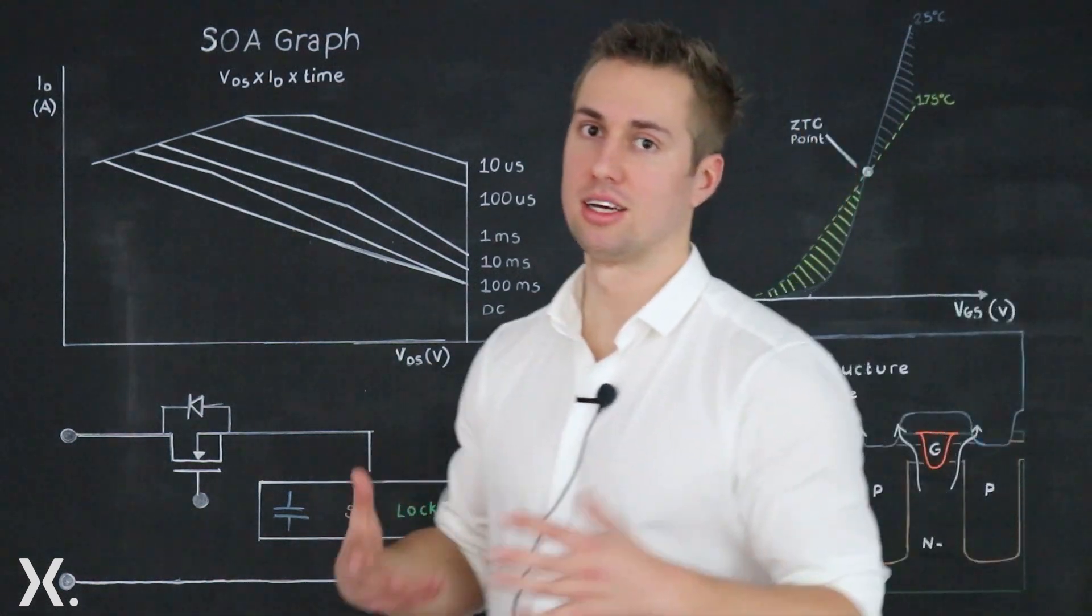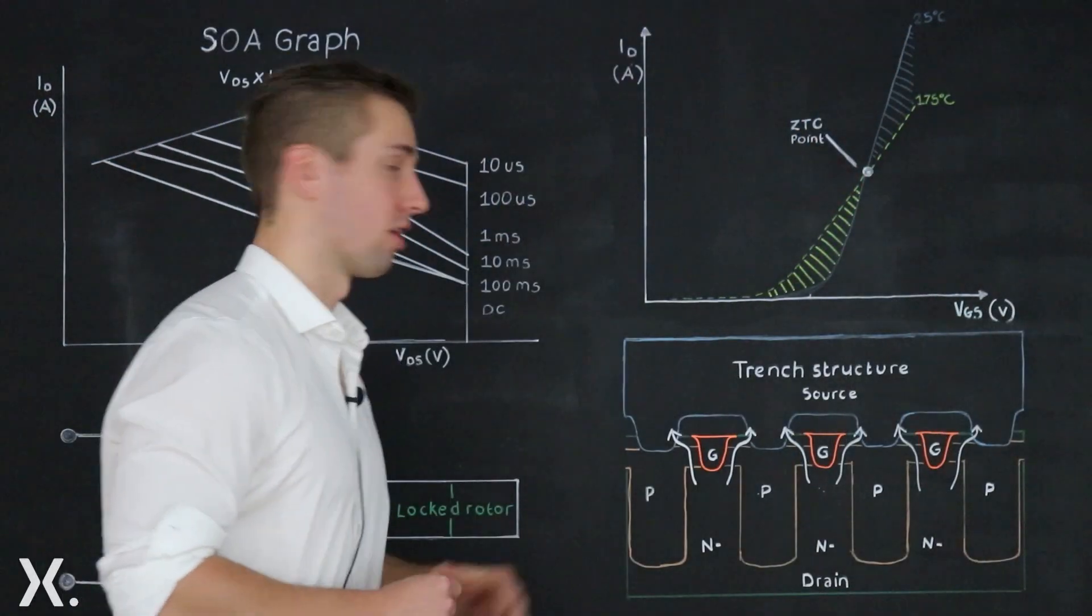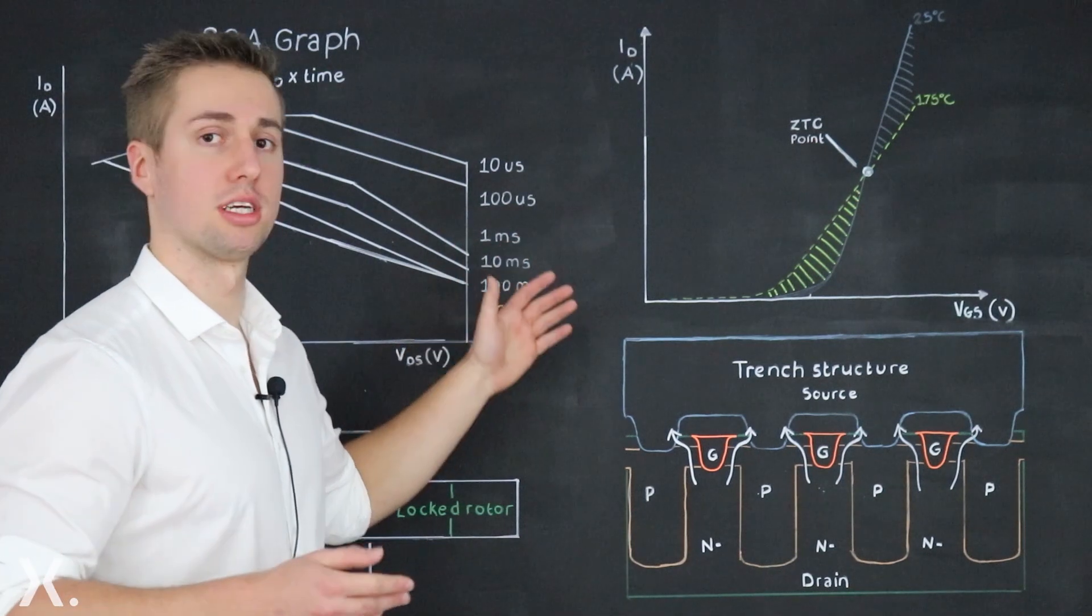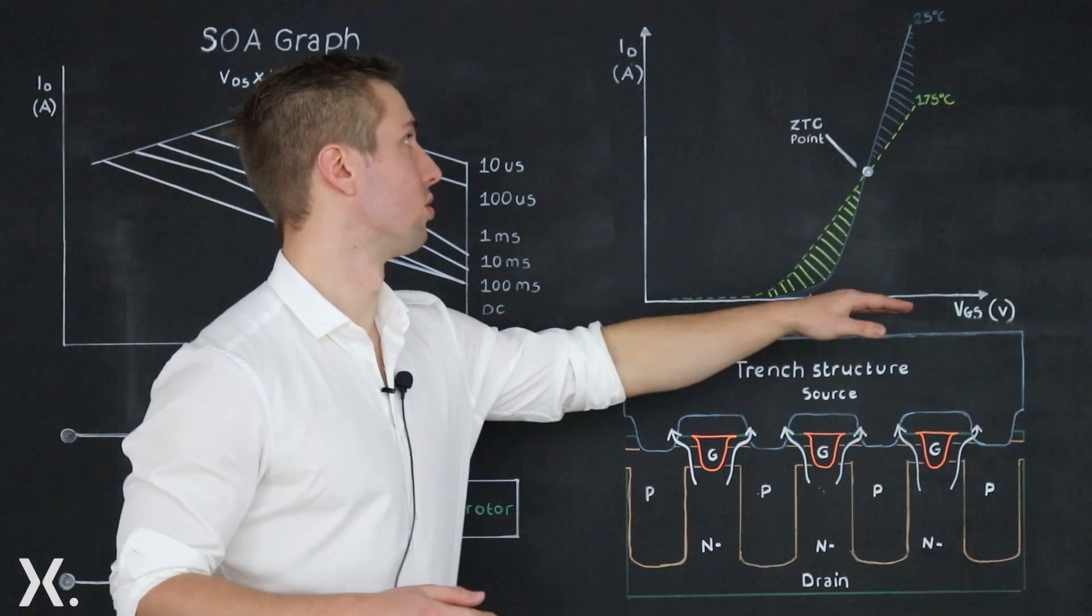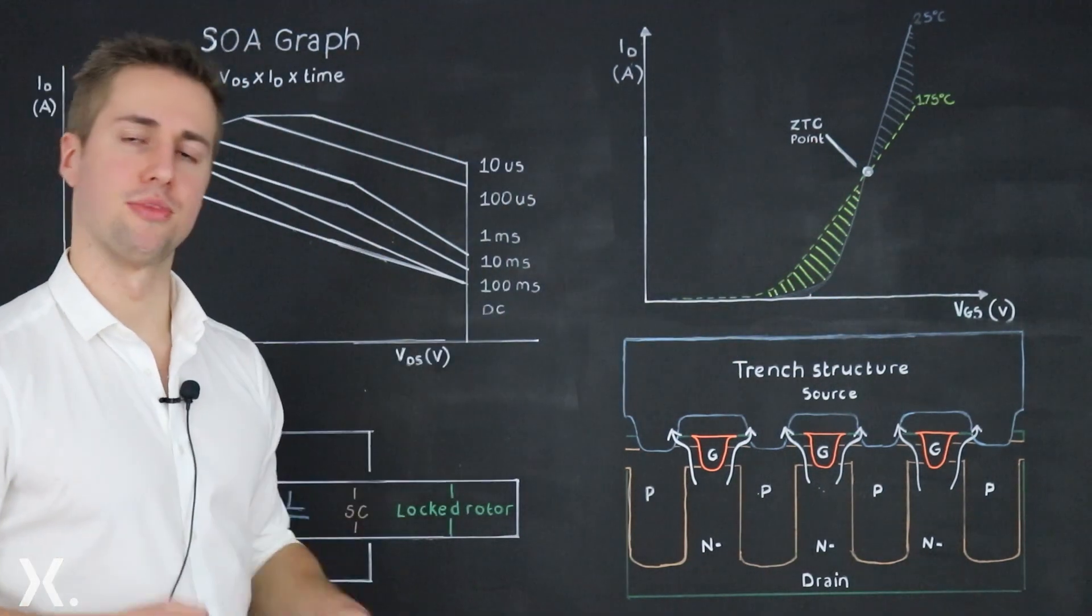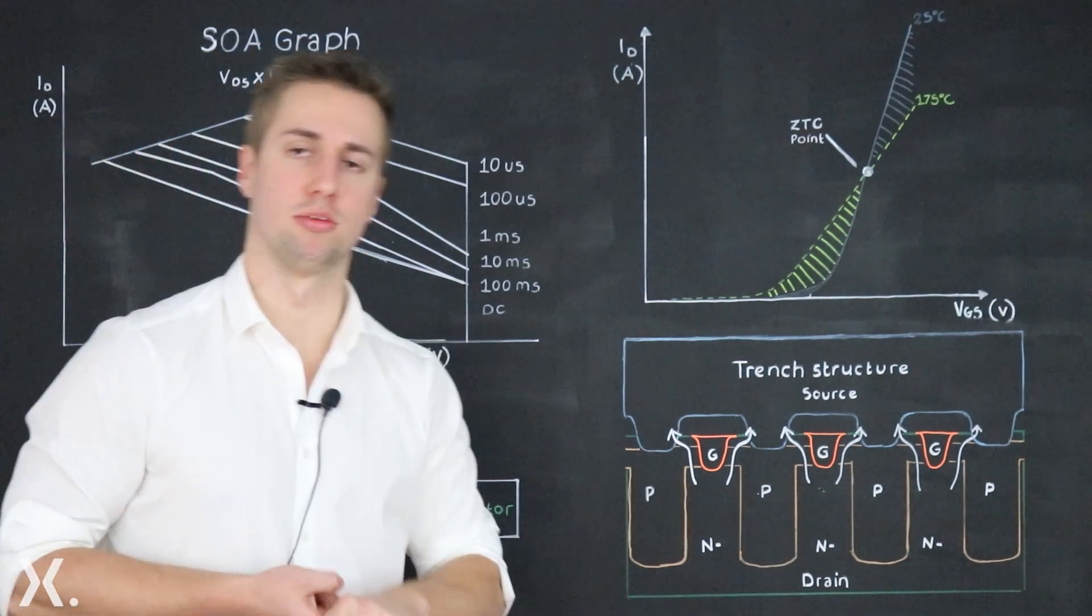To understand SOA better let's have a look at the transconductance curve. This shows the characteristic behavior between the gate source voltage and the drain current. Now there are two relationships to keep in mind for a MOSFET here.